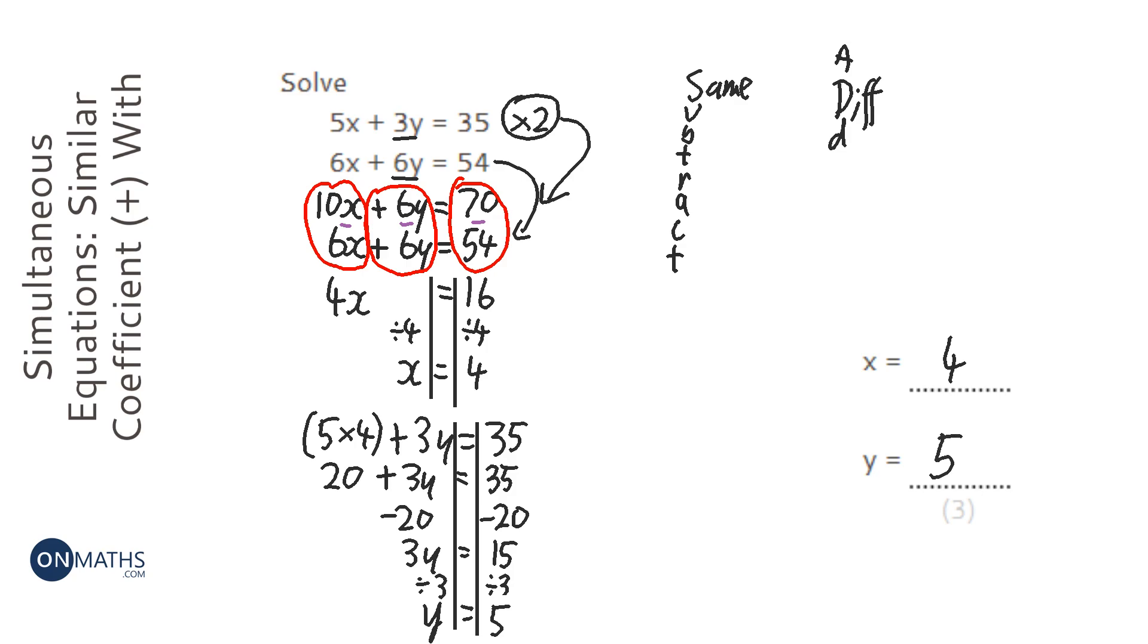And you can substitute that into the second equation here to check that it works. What is it? 24 plus 30. That would equal 54. So we know it's correct.